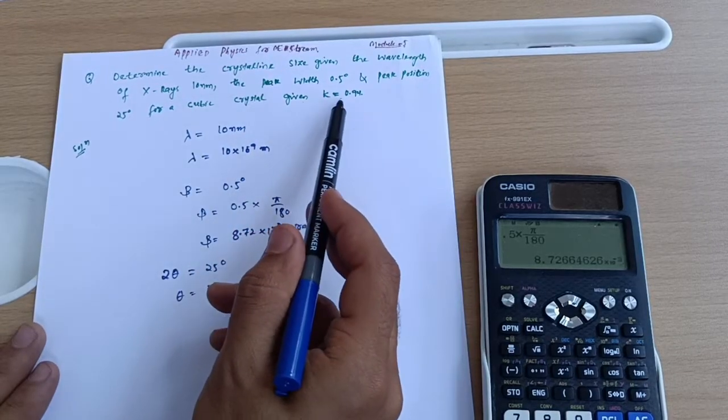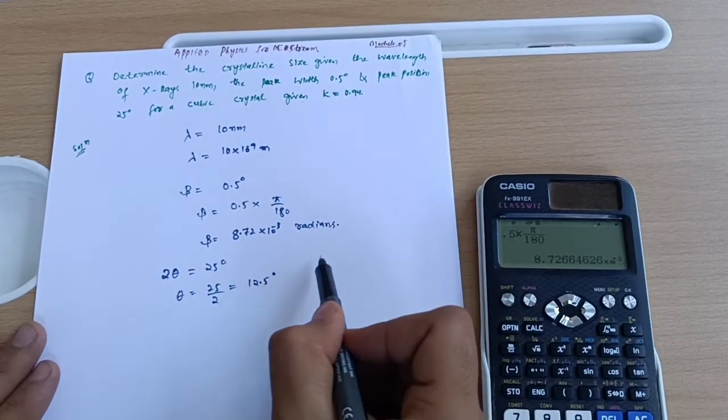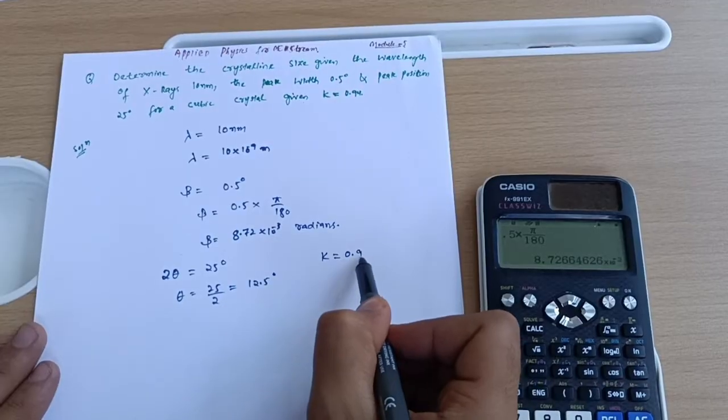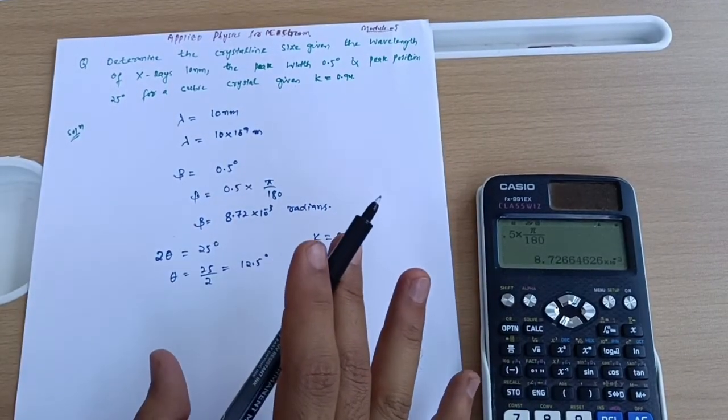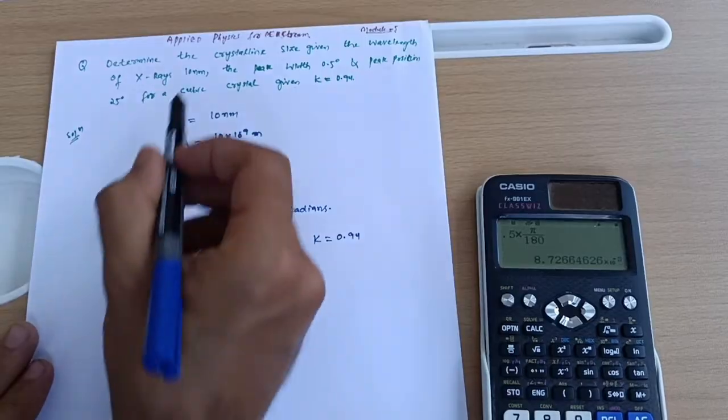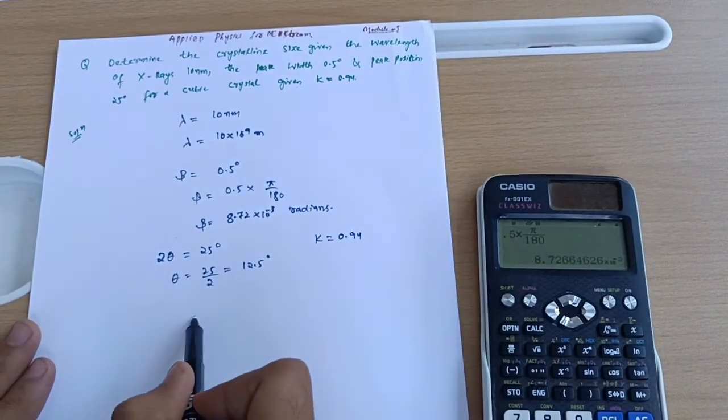For a cubic crystal, given Scherrer constant K = 0.94. That's all given. Now, what is the formula? You already know for crystal size determination we have the formula...